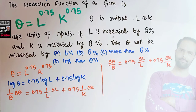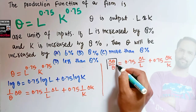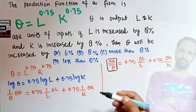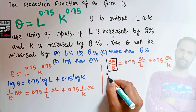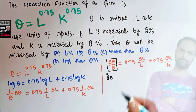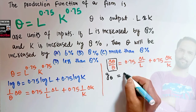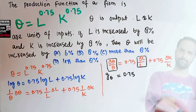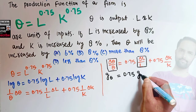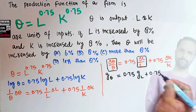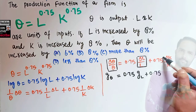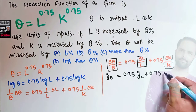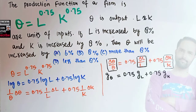Now dQ/Q reflects change in output divided by initial output — this shows the percentage change in output, or growth rate of output. Let's denote it G_Q. So the growth rate of output equals 0.75 times the growth rate of labor — since dL/L is percentage change in labor — plus 0.75 times G_K, the growth rate of capital.